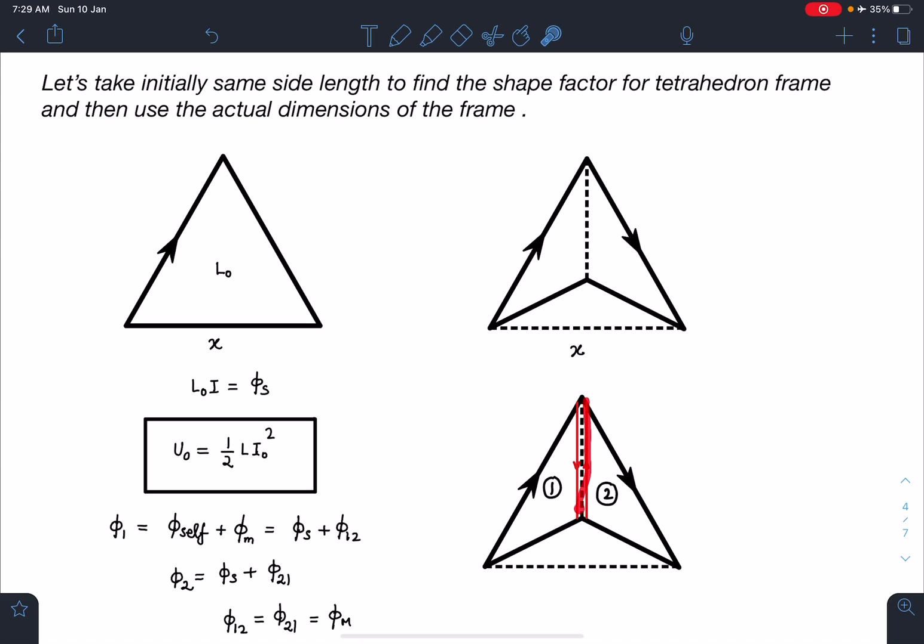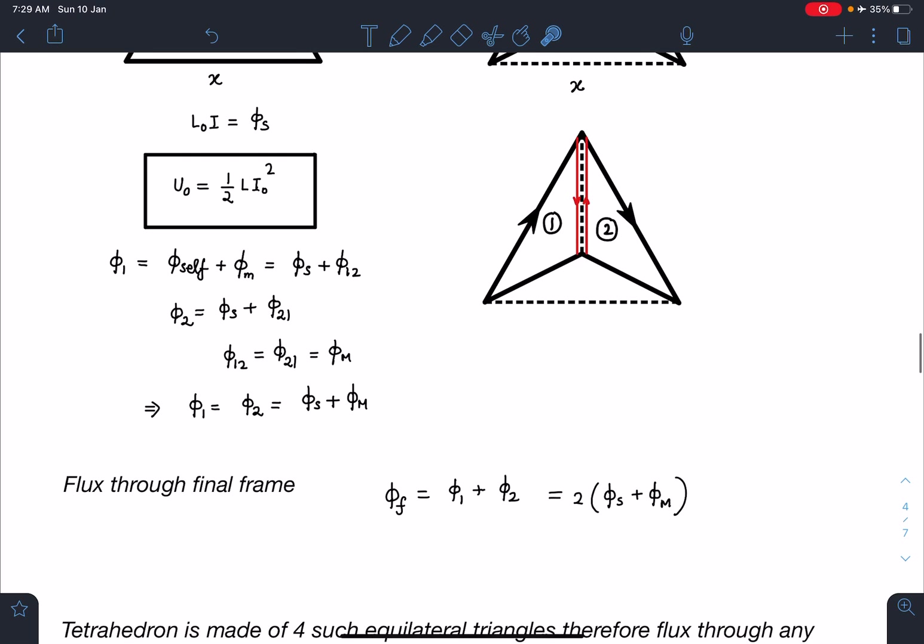I can write this flux passing through two as φ_self due to its own current which is same as the previous one, so φ_s + flux passing through two due to one that is φ₂₁. But if you remember reciprocity theorem it says that φ₁₂ and φ₂₁ is going to be same if the currents are equal in the two loops. I can write this as φ₁₂ and φ₂₁ as φ_m.